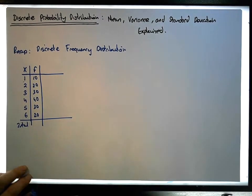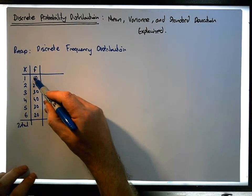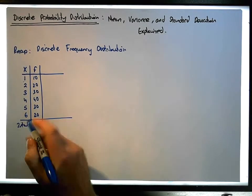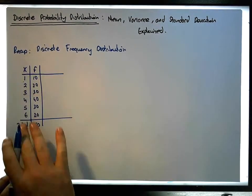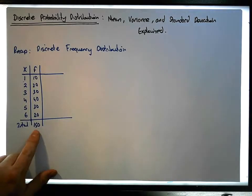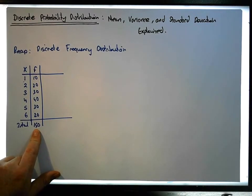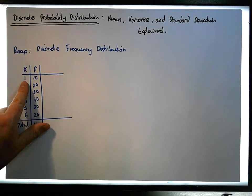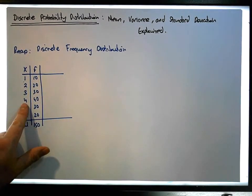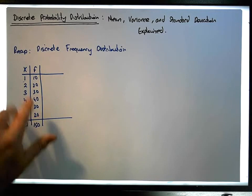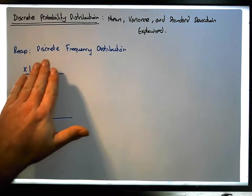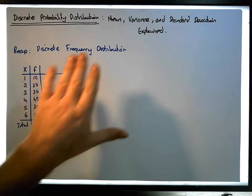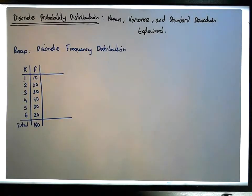That gives us a total of 150. So this frequency distribution represents: I rolled the die 150 times and recorded the face values that came up. The number one came up 10 times, number four came up 40 times, and so on. With a discrete frequency distribution it's quite straightforward to calculate the mean, variance and standard deviation, and we actually have formulas for that.